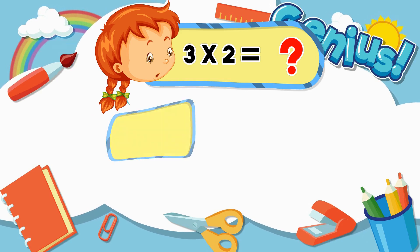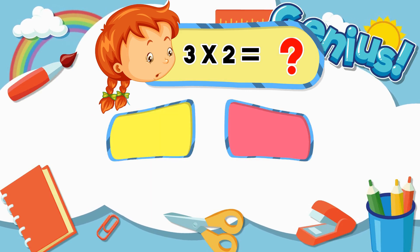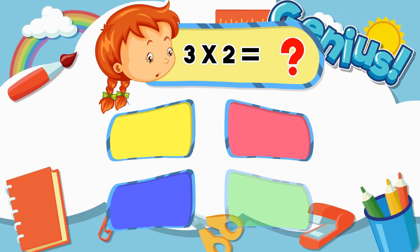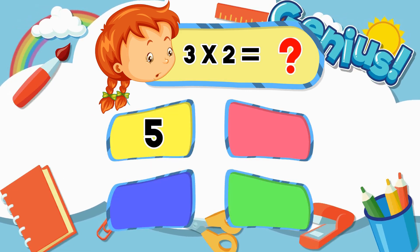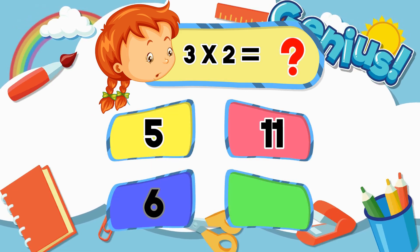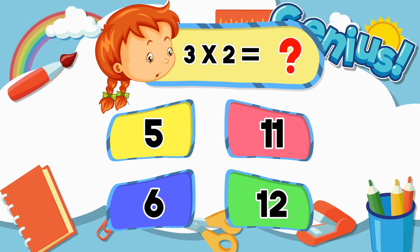What is 3 times 2? 5, 11, 6, 12. The answer is 6.